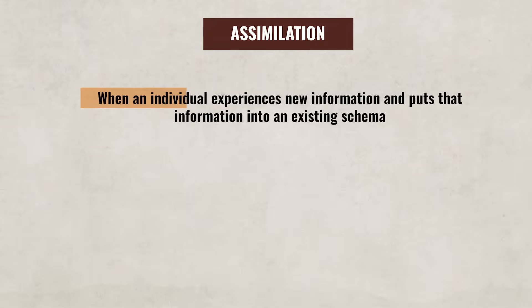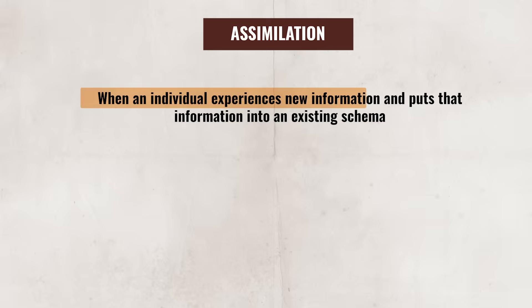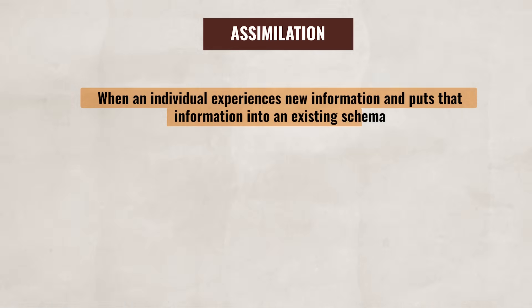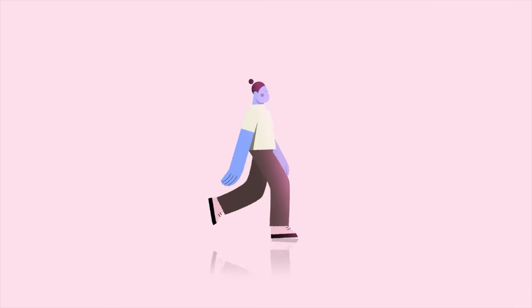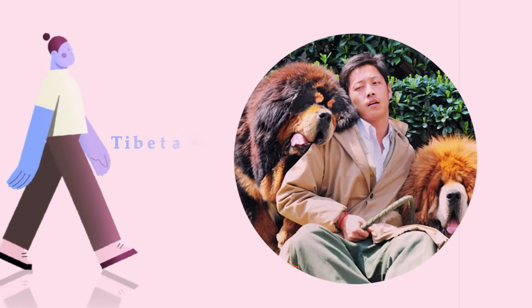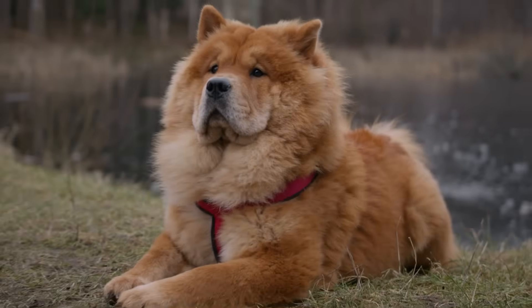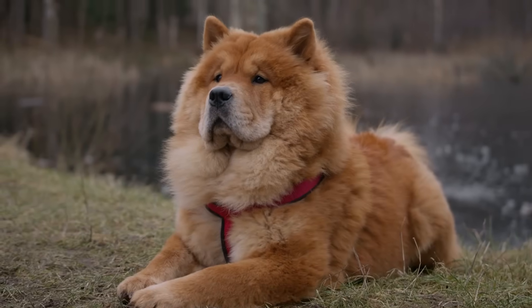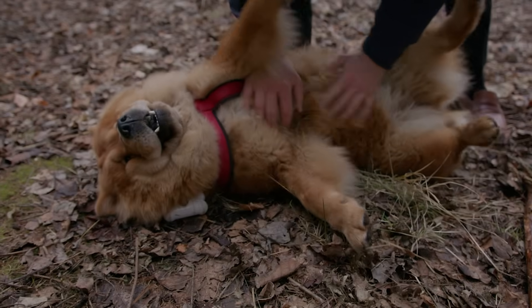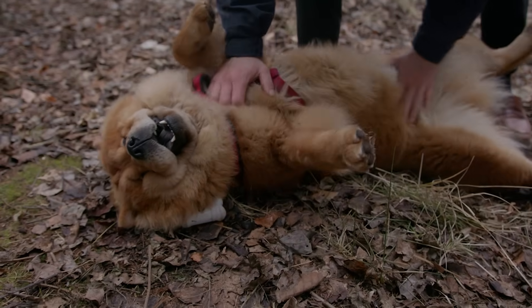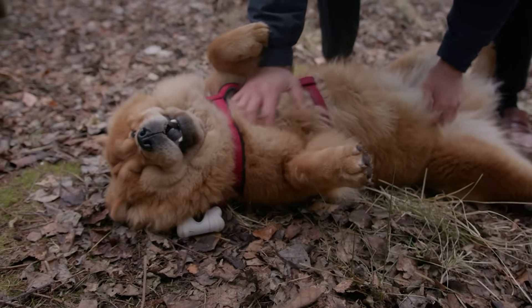Assimilation occurs when an individual experiences new information and puts that information into an existing schema. For instance, say you come across a new breed of dog you haven't seen before, such as a Tibetan Mastiff — seriously, look at that dog, those dogs are intense. Odds are you can still recognize this unfamiliar breed as a dog, so you'll add it to your dog schema. This is assimilation because the new information is being put into an existing schema.